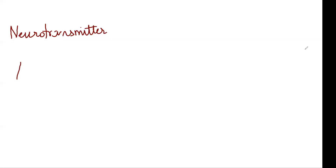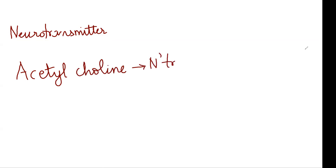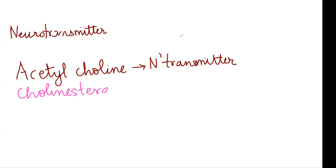So we were talking about what happens. The neurotransmitter, which is the commonest neurotransmitter in our neurons — most of the neurons have a neurotransmitter called acetylcholine. Now, this neurotransmitter is broken down by an enzyme called cholinesterase.